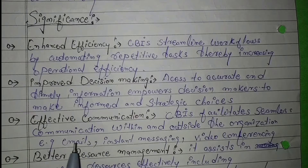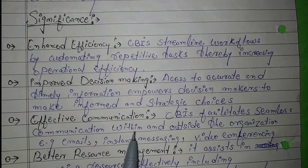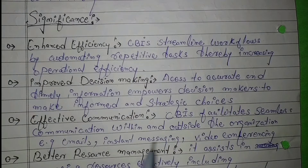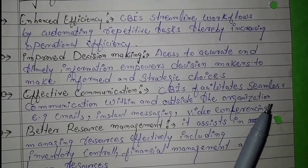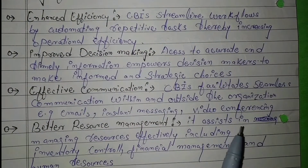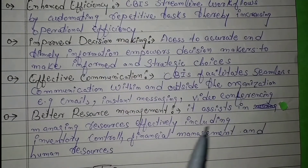Third is effective communication. Computer based information systems facilitate seamless communication within and outside the organization, like email, instant messaging, and video conferences.